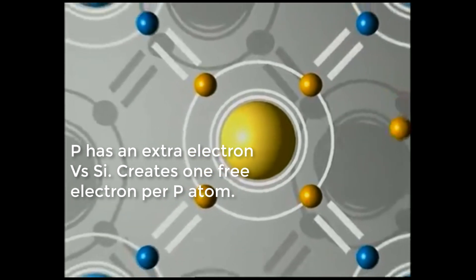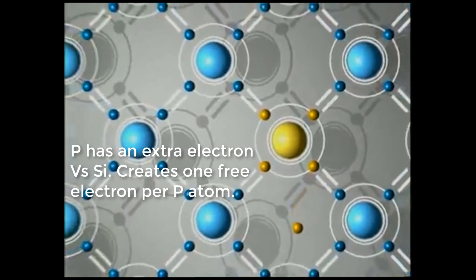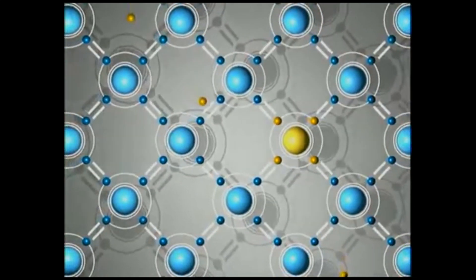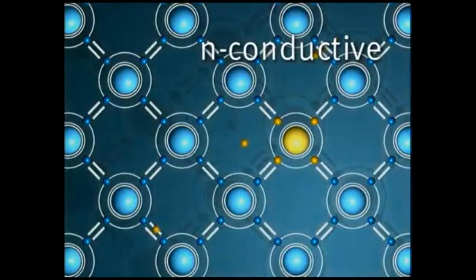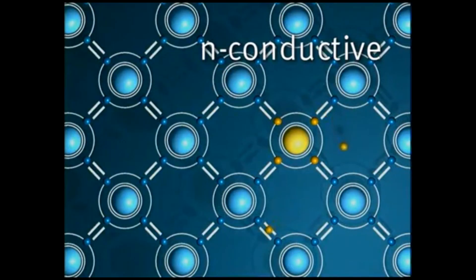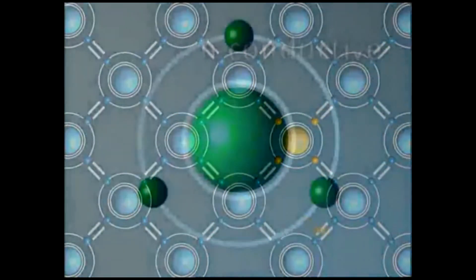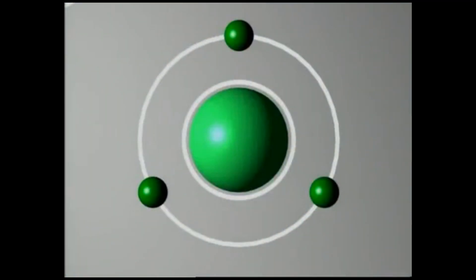The fifth phosphorous electron built into each molecule of the silicon crystal lattice can move freely. Because of this structure, the silicon-phosphorus crystal is negatively charged, or N-conductive.